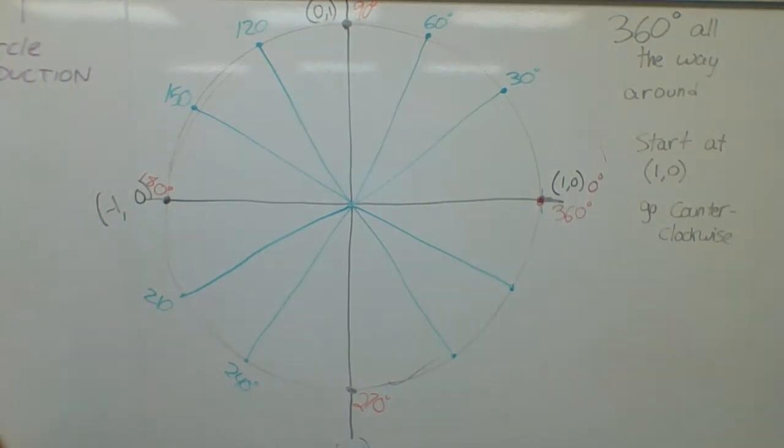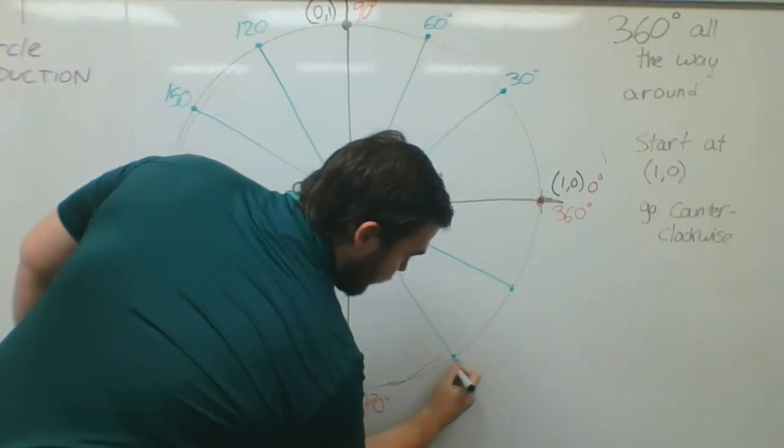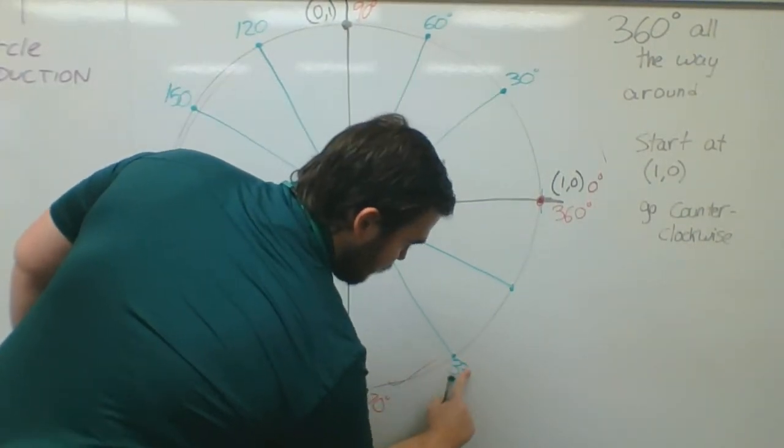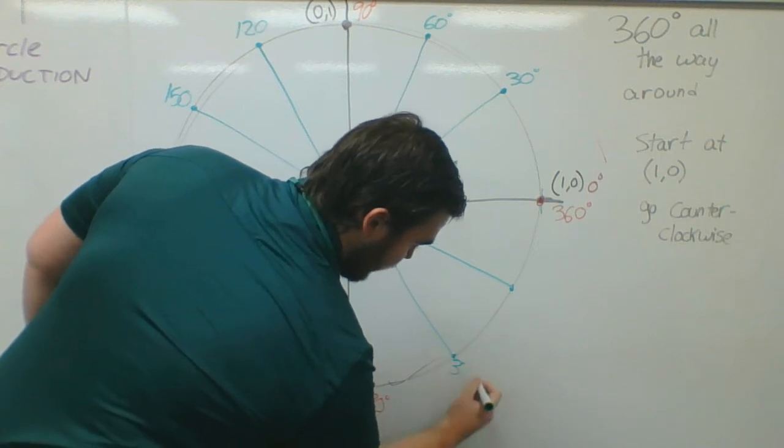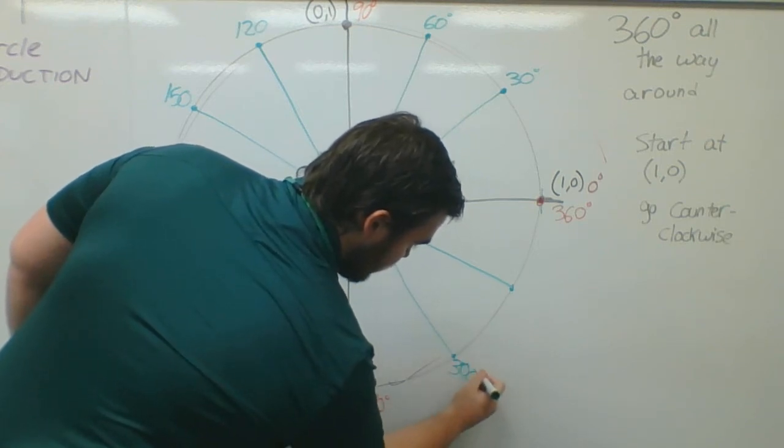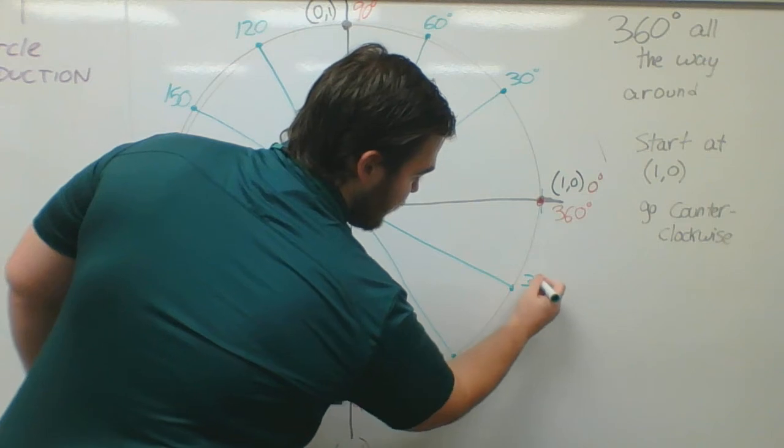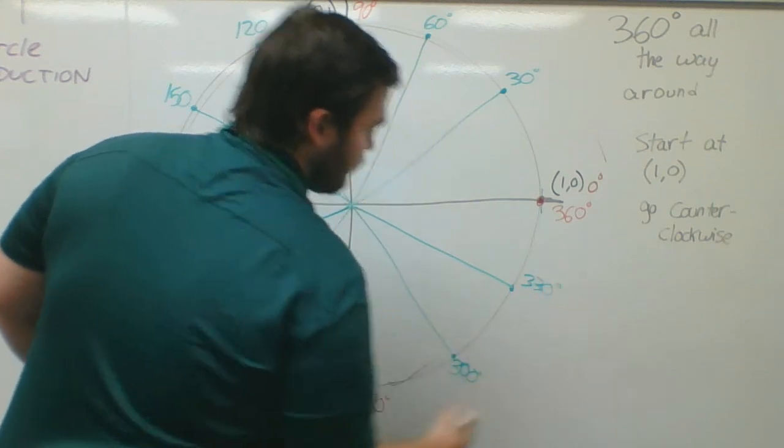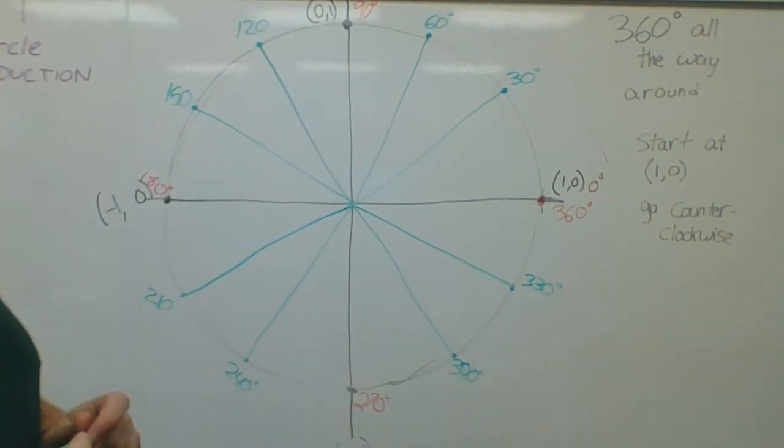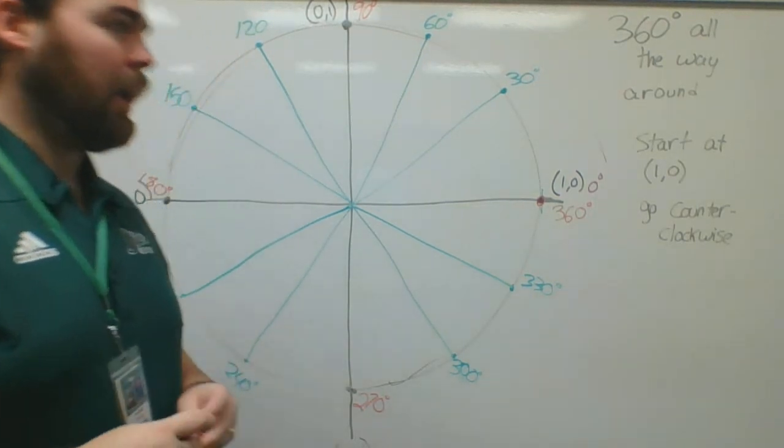Plus 30 again, 300 degrees, then 330 degrees. So this is what you call the 30 series.